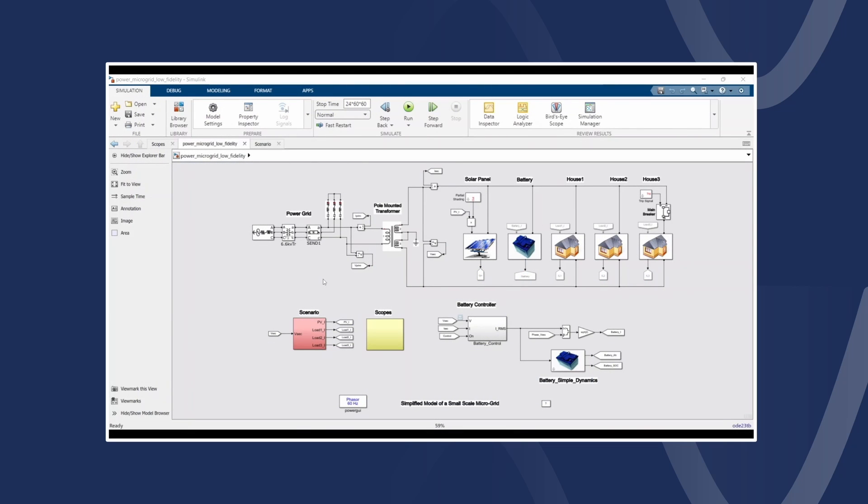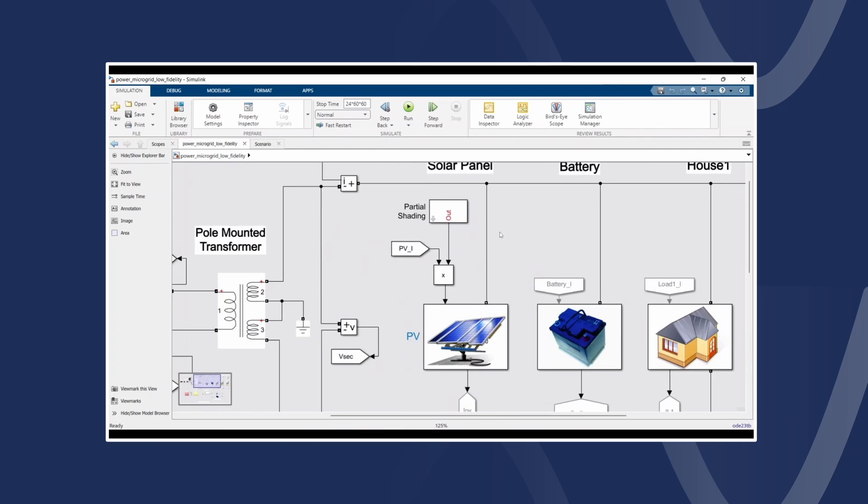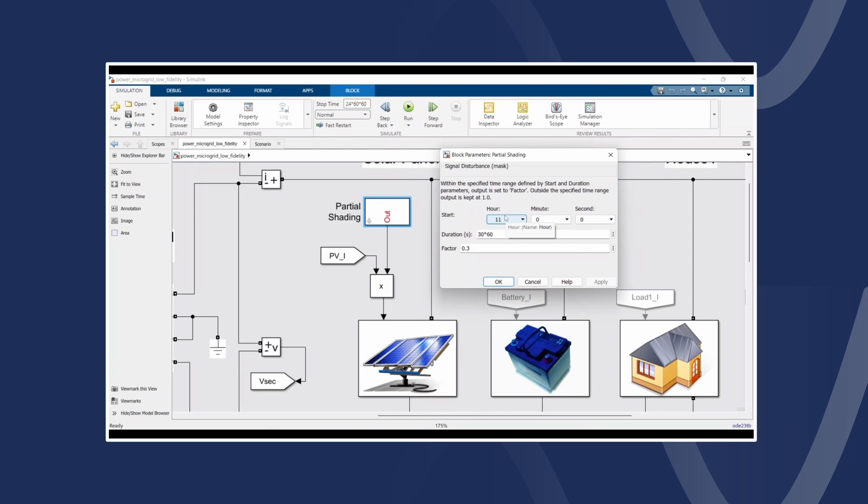Once we open up the model, you can see that we have the same architecture that we had in the presentation. We have our solar panels, the battery model and the three houses that are representing our loads. You can also notice some extra blocks, the battery controller and the battery dynamics model. But one really important thing to mention is the partial shading of our solar panels. Because at 11 am we are modeling a partial shading phenomenon of the solar panels and we are using a signal disturbance block for this. This shading lasts for 30 minutes and we will see the effect of this in the simulation results later.